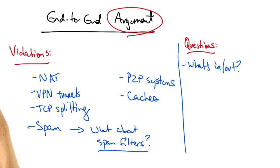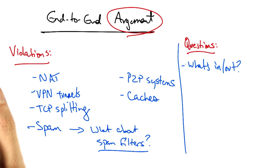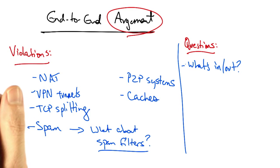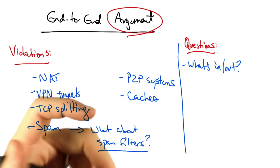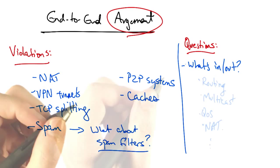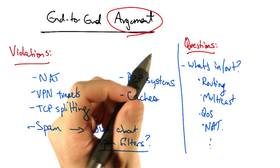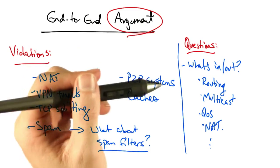There are questions about what's in versus out, certainly, and what functions belong in the dumb minimal network. For example, routing is currently in the dumb minimal network. Do we really believe that it belongs? What about multicast, mobility, quality of service, what about NATs?